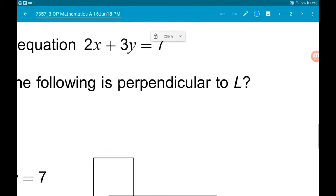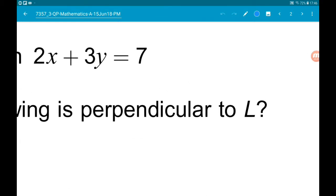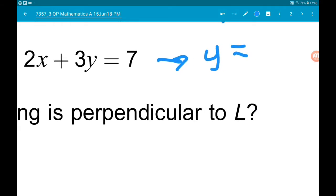So the gradient of this guy, if we rearrange it, we're going to get y is equal to minus 2x over 3.